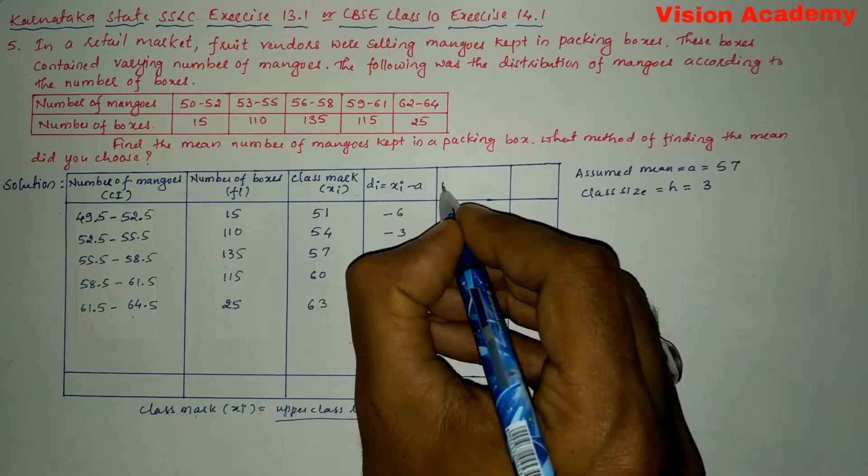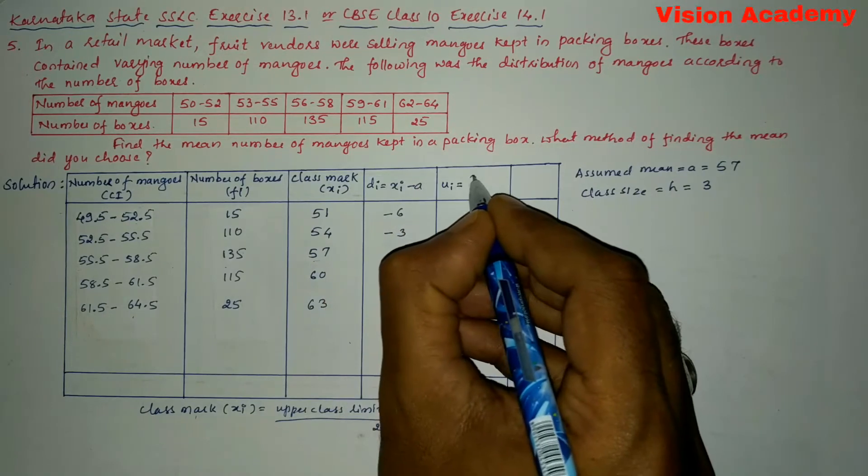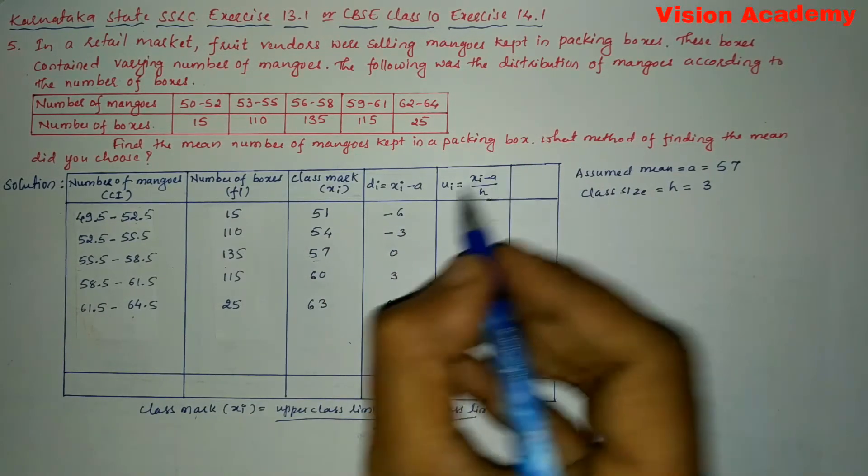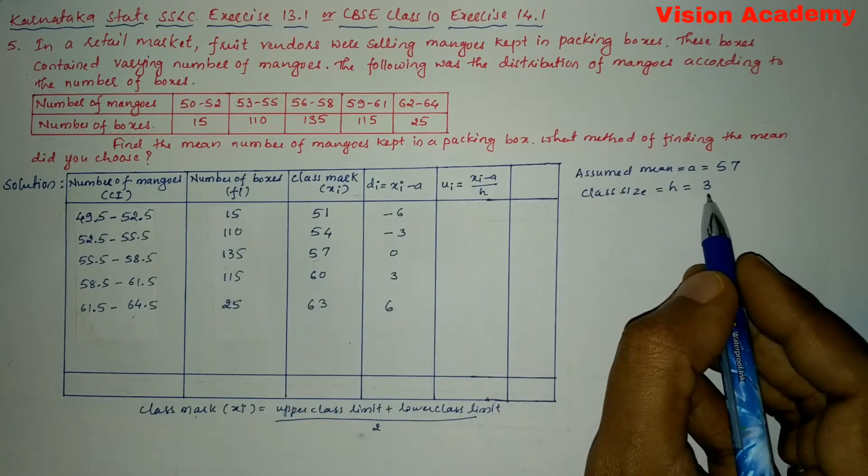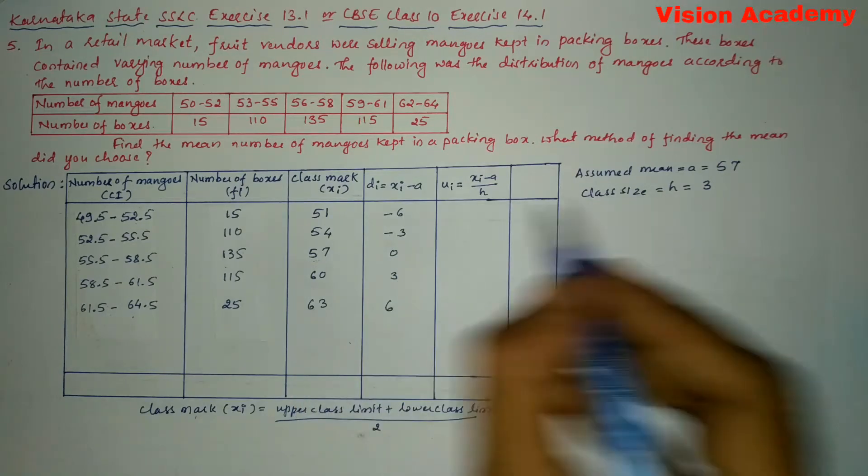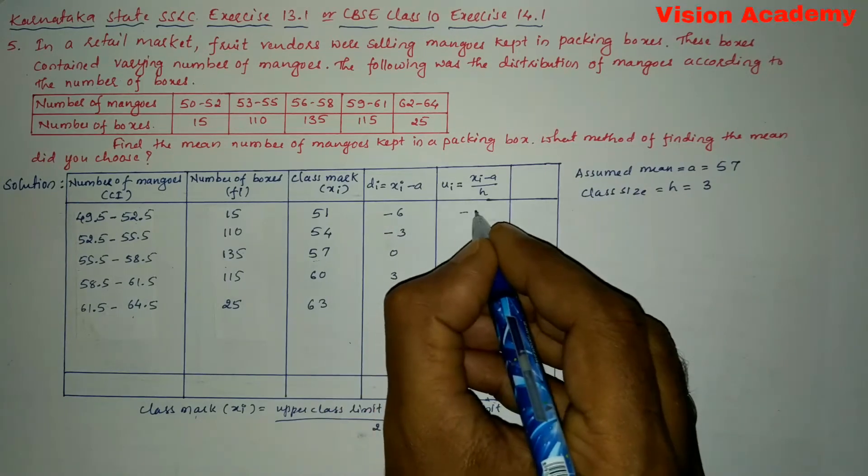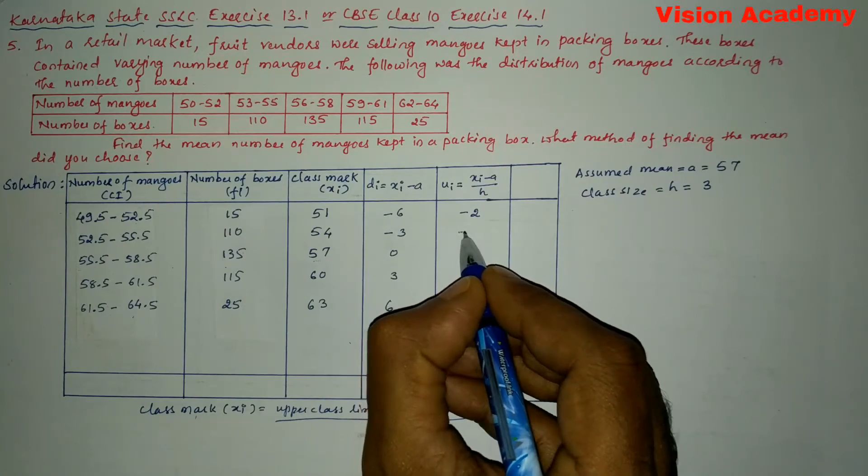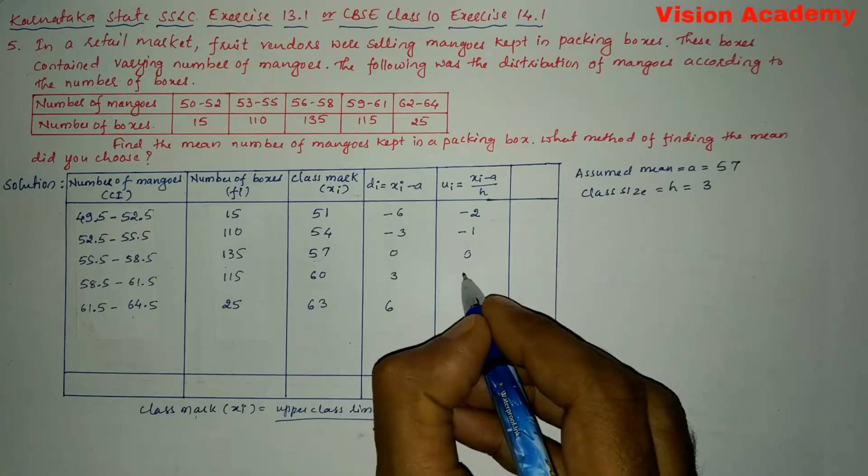Next we will move on to ui. ui is equal to, here we will write xi minus a divided by h. So here xi minus a is di, so di divided by h is 3. So here we need to divide this di by 3. So that is minus 6 by 3, so here we will get minus 2. Next 3 divided by 3, so it will become minus 1. Next 0 by 3 gives us 0. Next 3 by 3 is plus 1. 6 by 3 gives us 2.